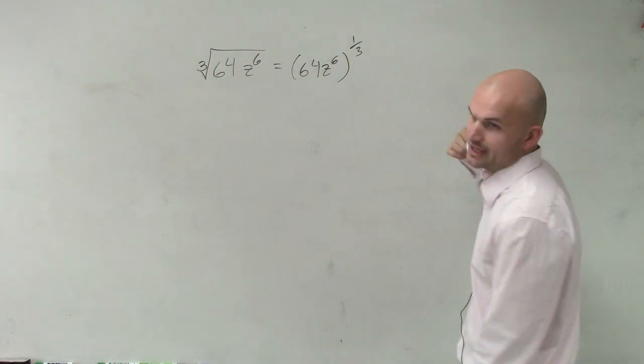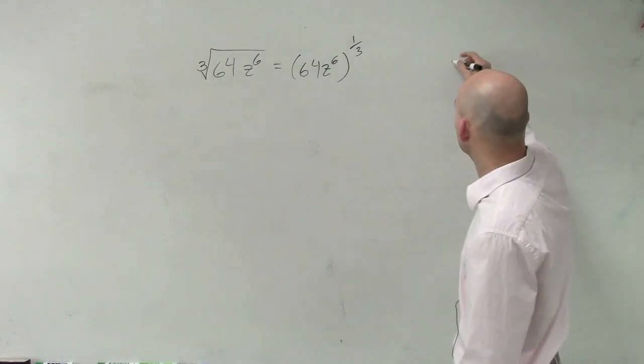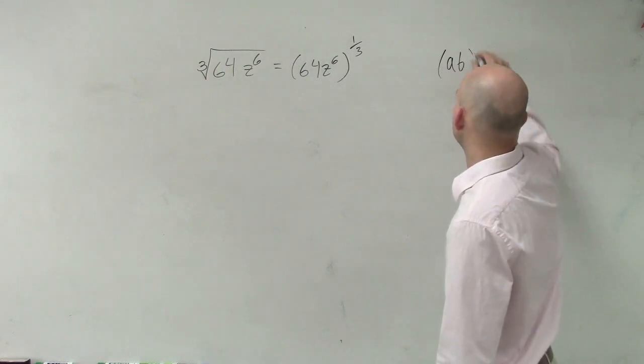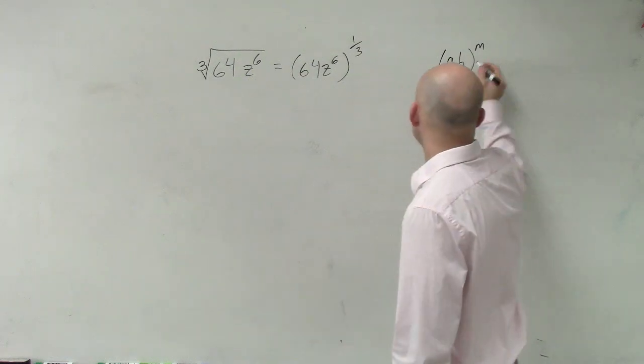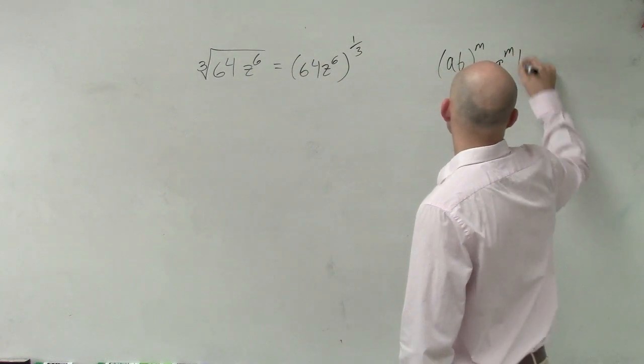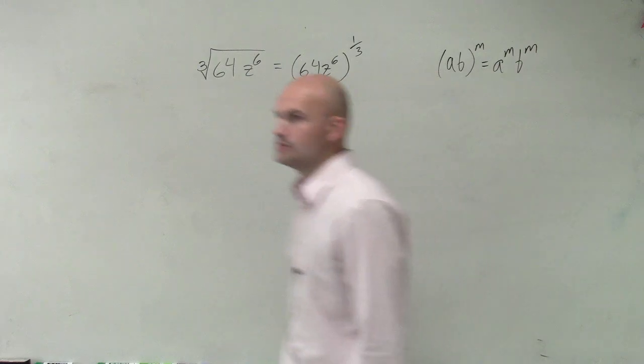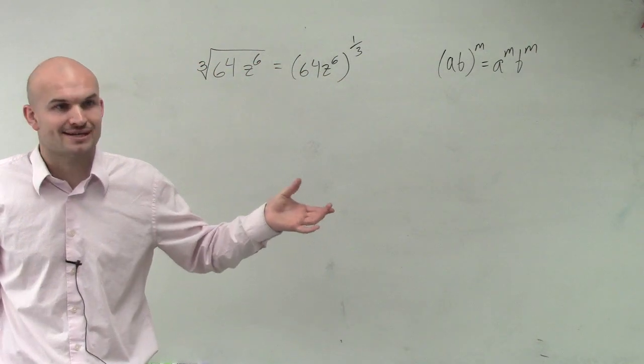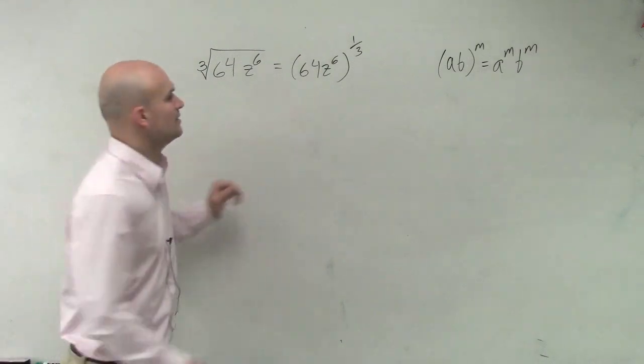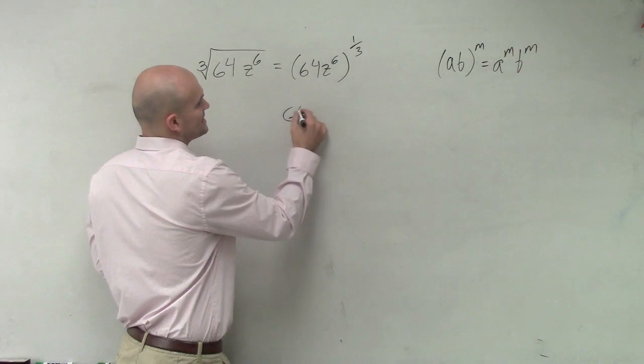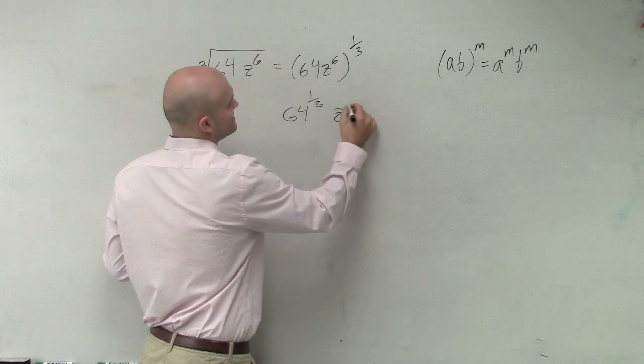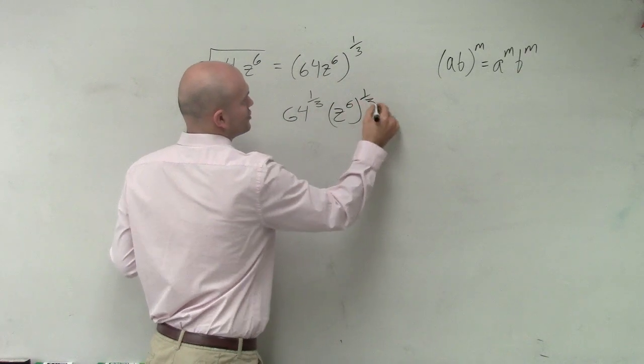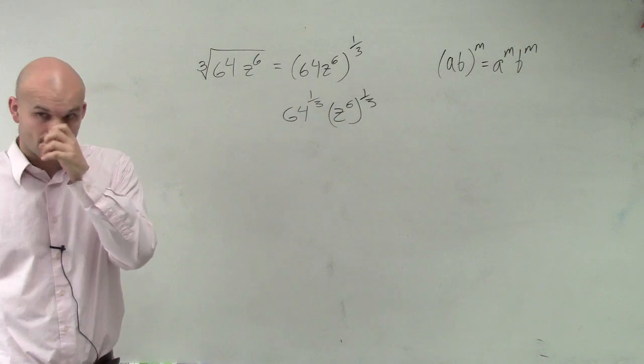Then we need to go back and work on another rule. If I have a times b raised to the m power, that equals a to the m times b to the m. So remember, exponents, we distribute them among multiplication and division. So here, what we have is 64 to the 1 3rd, and then z to the 6th to the 1 3rd, right?